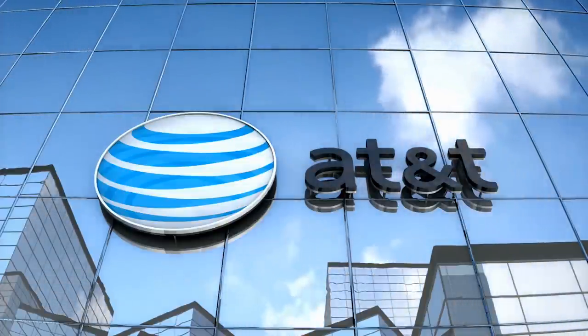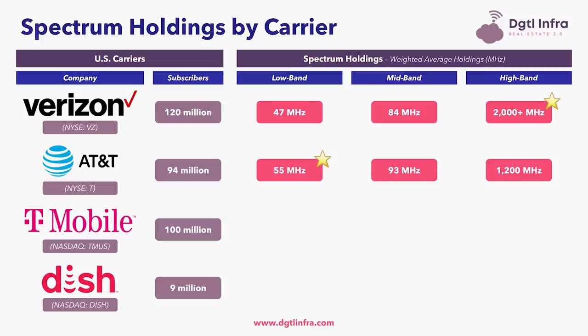Moving to AT&T: they are number one out of these four carriers in low-band holdings, number two in mid-band holdings, and number three in high-band holdings. In low-band, AT&T holds 55 MHz of spectrum depth. In mid-band, AT&T holds 93 MHz of spectrum depth.